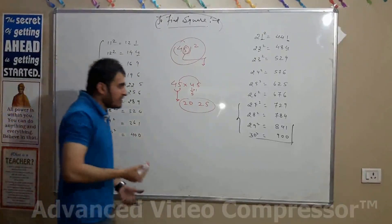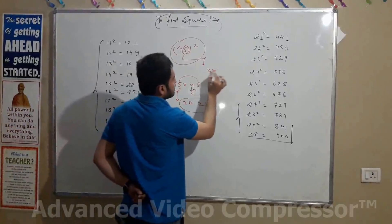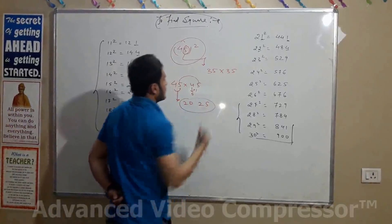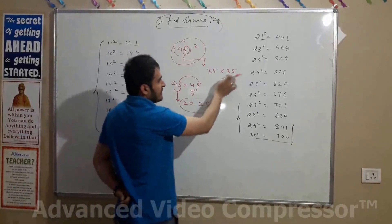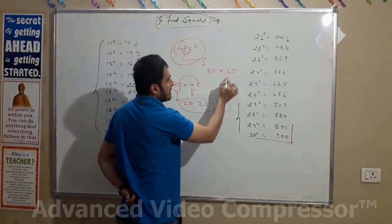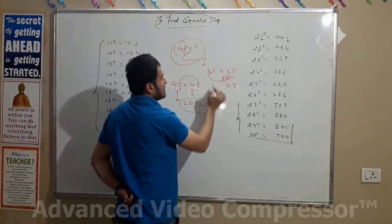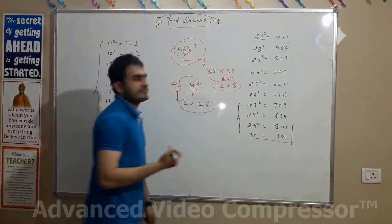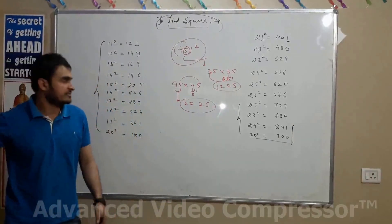Let's take another example: 35. What is 35²? 5 × 5 = 25. Add 1 to the tens digit: 3 + 1 = 4. Then 3 × 4 = 12. So the answer is 1225.